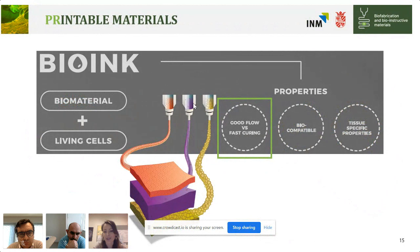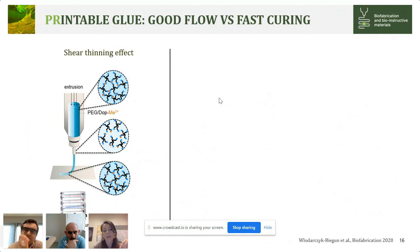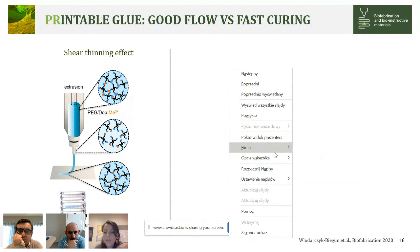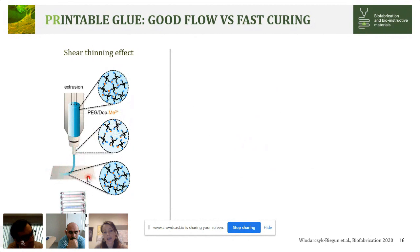When we apply pressure and the strand passes through the narrow needle, we observe the so-called shear-thinning effect — the metal-catechol interactions are temporarily released, allowing the material to flow nicely. When it reaches the printing stage, the network reforms and cross-linking recovers, yielding a nice construct. The system can be easily adjusted by changing the metal ions used or the pH of the ink.